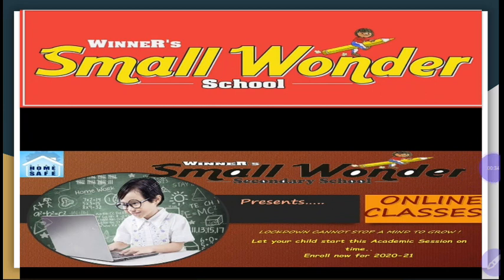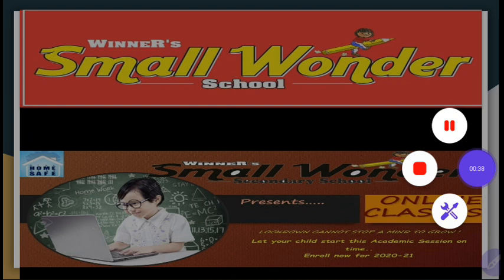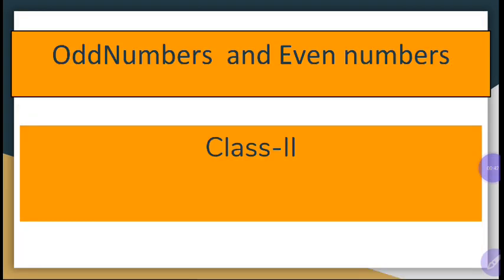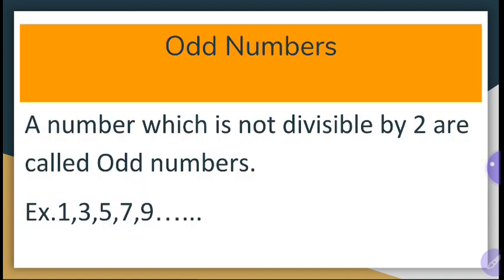Now we will start with odd and even numbers. Odd numbers: a number which is not divisible by 2 is called an odd number. For example, 1, 3, 5, 7, 9. These are odd numbers because they are all not divisible by 2.